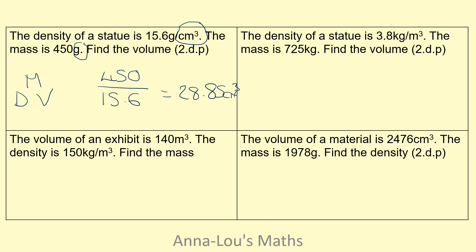So let's have a look at this one. The density of a statue is 3.8 kilograms per meters cubed, and the mass is 725 kilograms. So again, I'm looking for volume, so mass divided by density. My mass is 725, my density is 3.8. So if I do that to two decimal places, I will end up with 190.79 meters cubed.